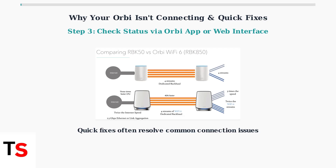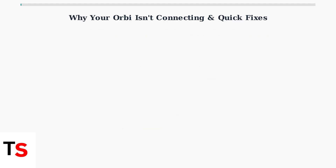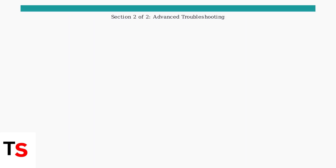Modern Orbi systems like the Wi-Fi 6 models offer improved performance and reliability. If these basic steps don't resolve your connection issues, advanced troubleshooting techniques may be needed. When basic troubleshooting steps don't resolve your Orbi connection issues, it's time to move to advanced techniques. These methods require more technical knowledge but can solve persistent problems.